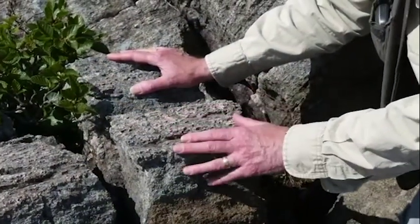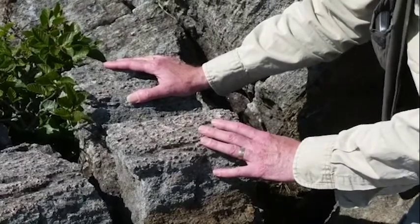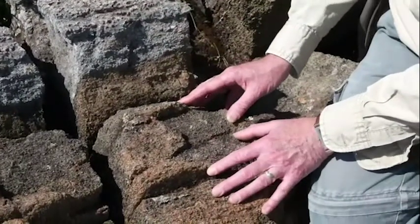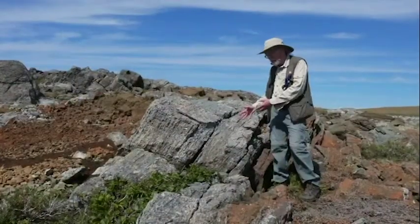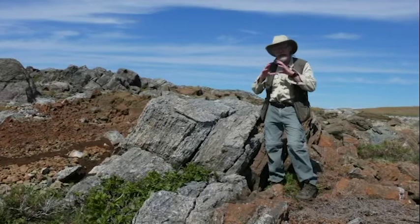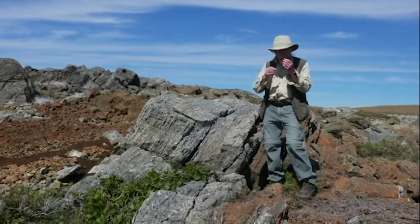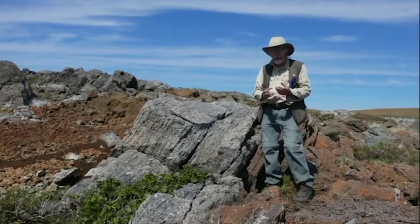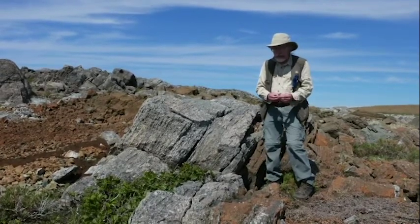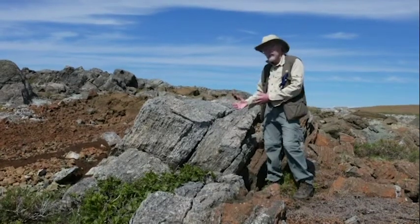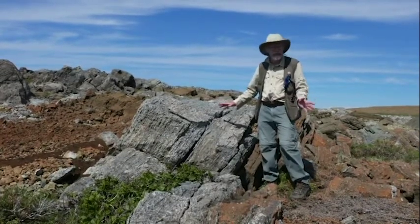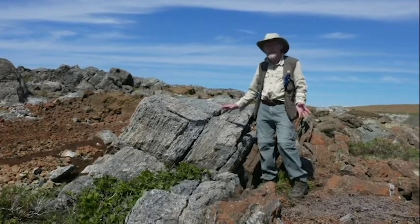This gray rock here is gabbro. It's a feldspar bearing rock. It has some olivine and pyroxene in it. And it contrasts with the rusty weathering rock down below me here, which is peridotite. This is a boundary between feldspar bearing rocks and rocks without feldspar, probably formed in a magma chamber at a spreading ridge underneath a mid-ocean ridge. The earliest crystals to settle on the bottom of the magma chamber were mostly olivine and pyroxene, and they make peridotite. We call these rocks cumulate peridotites. And then later on, the rest of the magma crystallized to form this gabbro here. So this is one of the few places in the world where you can actually stand on the Moho surface, which is usually buried between 5 and 70 kilometers below the Earth's surface.